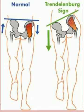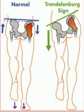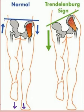To perform the Trendelenburg sign, you stand behind the patient and ask the patient to stand on both limbs parallel to each other. When the patient stands with both feet on the ground, both ASIS should be at the same level in a normal person — both ilium should be on the same plane.